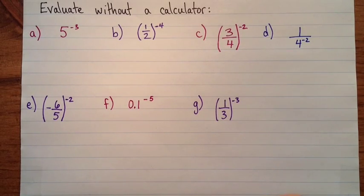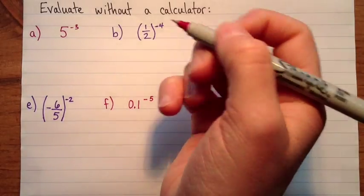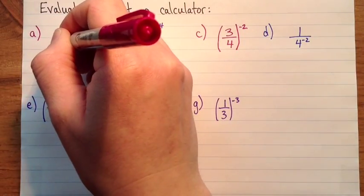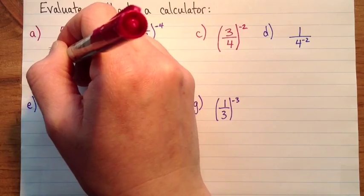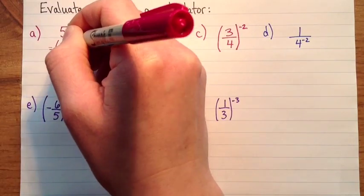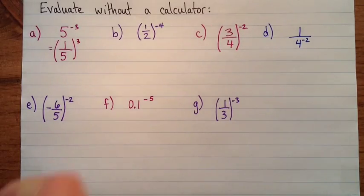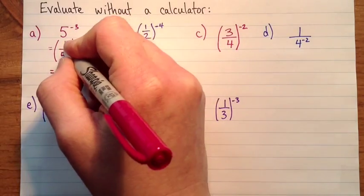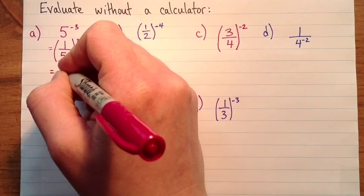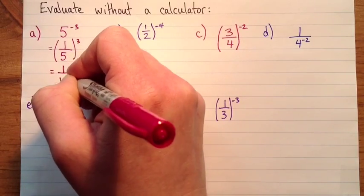Okay, so to start with, we have 5 to the exponent negative 3. So that's equal to the reciprocal of 5, which is 1 over 5, to the exponent positive 3. And that's equal to, we've got 1 cubed is 1, and 5 cubed is 125.